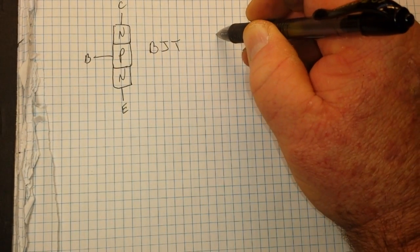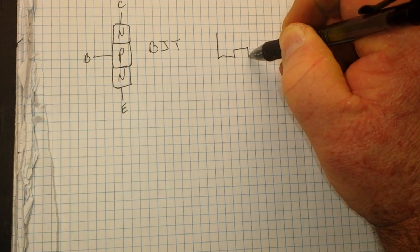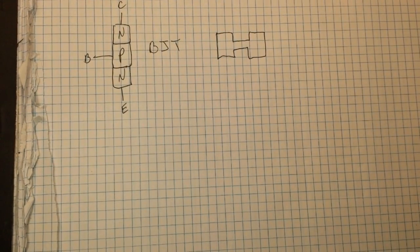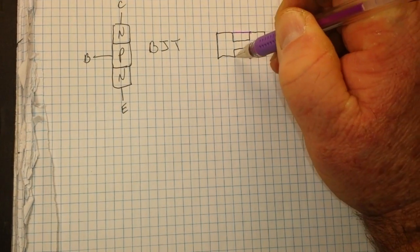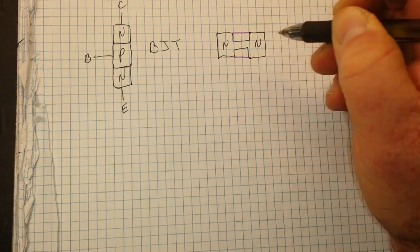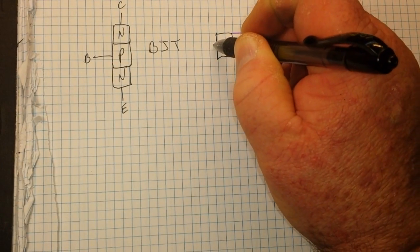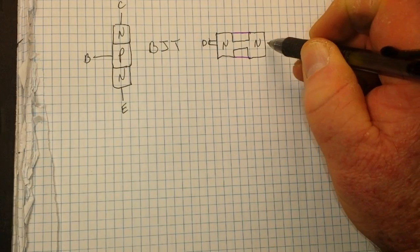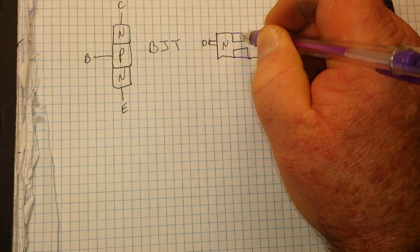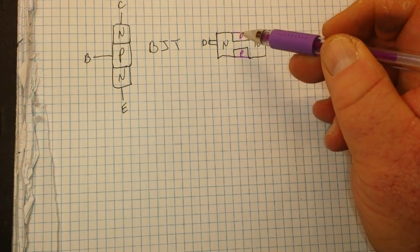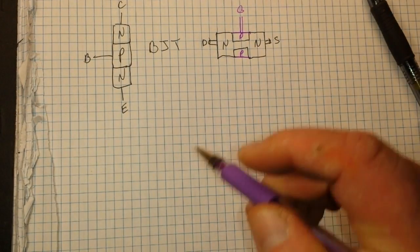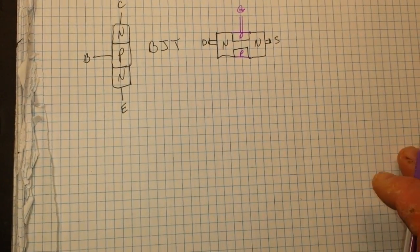Now, let's see if I can draw a halfway decent JFET. This is not out of my mind, by the way, I had to copy this out of a book to get it to look correctly. So all this material here is N-channel. This is our drain, this is our source, and then right here, think of this in 3D, think of it like a cylinder. So this P-channel wraps all the way around the N-channel. That's our gate.